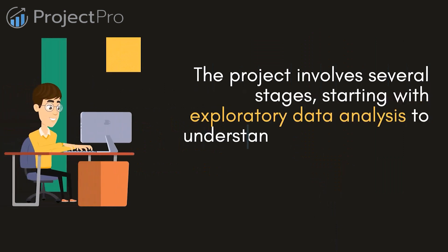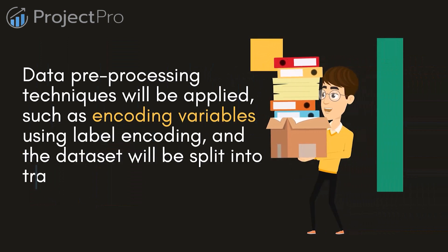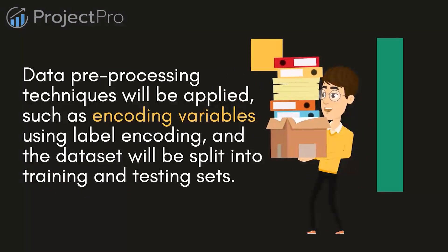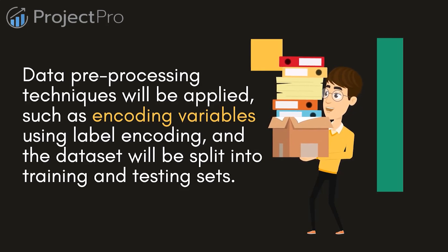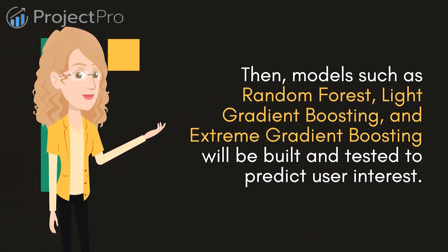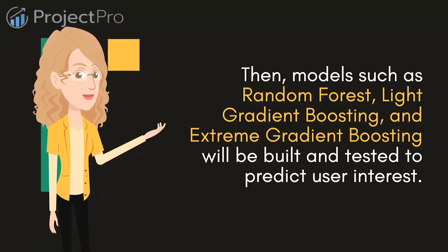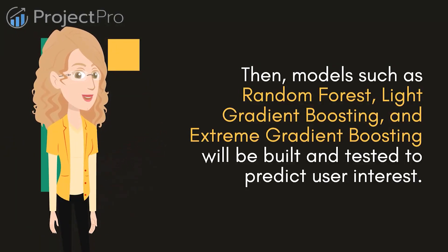The project involves several stages, starting with exploratory data analysis to understand the features and their relationships with the target variables. Data pre-processing techniques will be applied, such as encoding variables using label encoding, and the dataset will be split into training and testing sets. Then models such as Random Forest, Light Gradient Boosting, and Extreme Gradient Boosting will be built and tested to predict user interest.